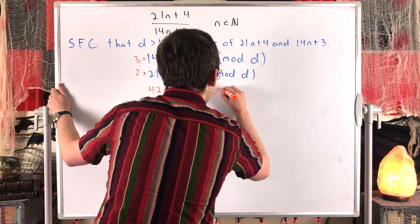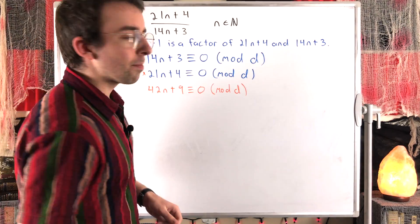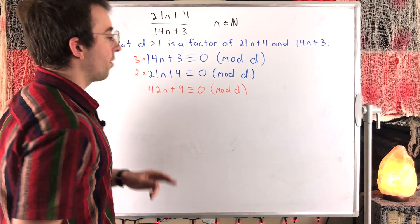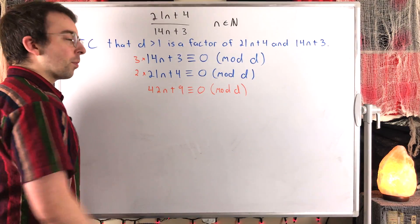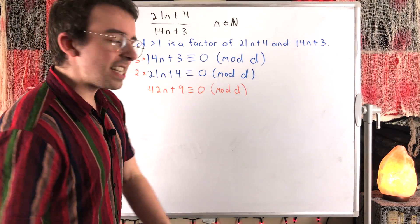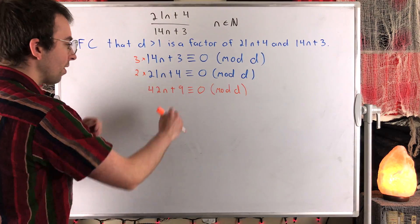And that should make sense, of course. If D is a factor of 14n plus 3, then D is also a factor of 3 times 14n plus 3. So we'll still have a remainder of 0 if we divide by D, so it's still congruent to 0 mod D. Same sort of thing down here.